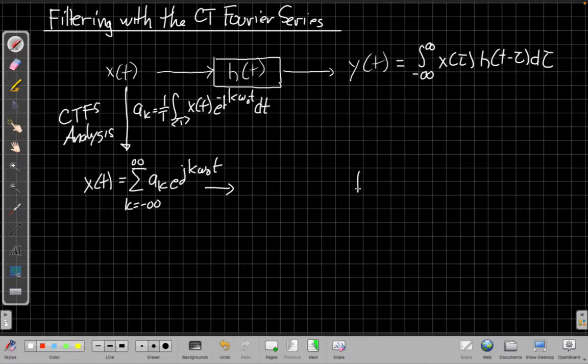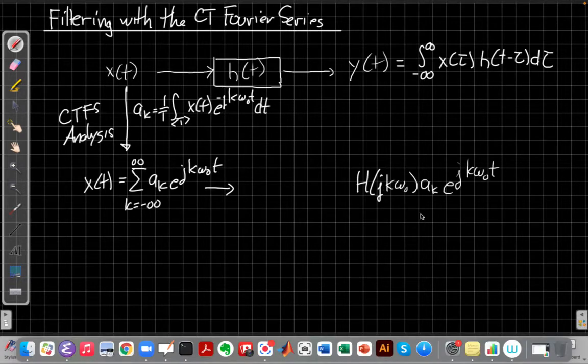which says for each term in this sum, the output is going to be the frequency response at that harmonic. So for each term in that sum, I get the same complex exponential coming out again because of the eigenfunction property, and the same gain on the a_k going in, but then that exponential has been scaled by h(j k omega_0), where this is the frequency response for the eigenfunction for this choice of s.